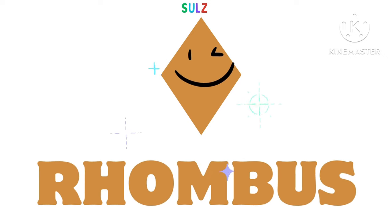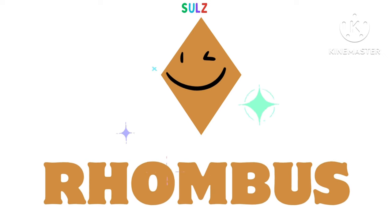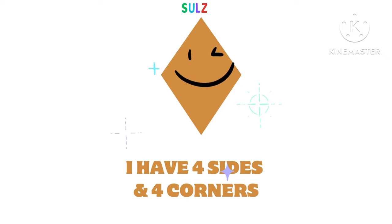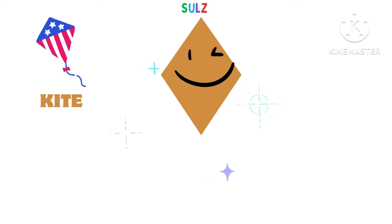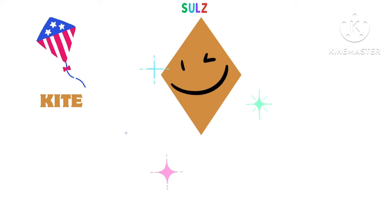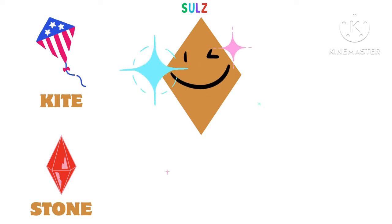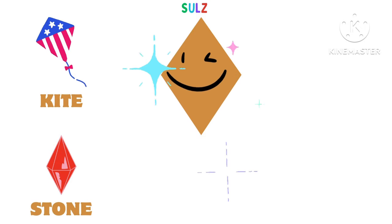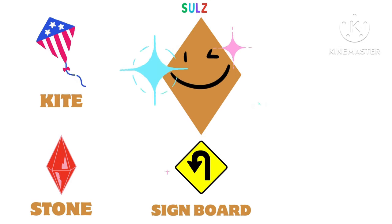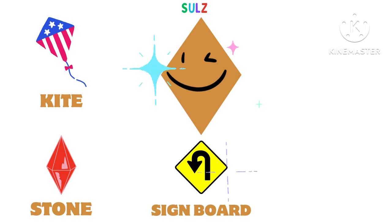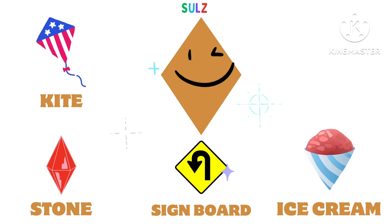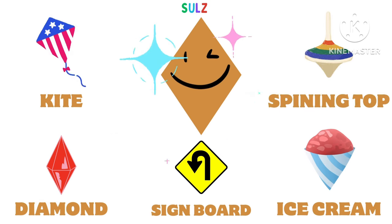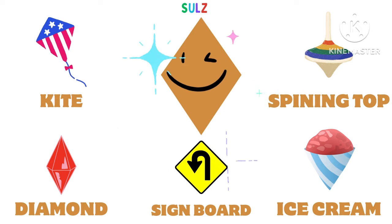Hi, I am rhombus. I have four sides and four corners. You can see me in a kite, stone, signboard, ice cream, and spinning top.